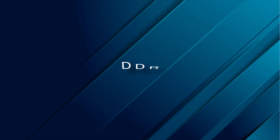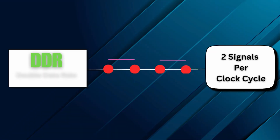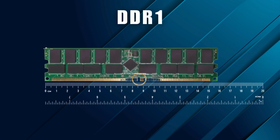Not all RAM is created equal. When you go to buy memory, the first thing you'll notice is an acronym — DDR, which stands for Double Data Rate. This means the memory can send or receive data twice per clock cycle, once on the rising edge and once on the falling edge of a signal. It's a clever way to double performance without doubling the clock speed.